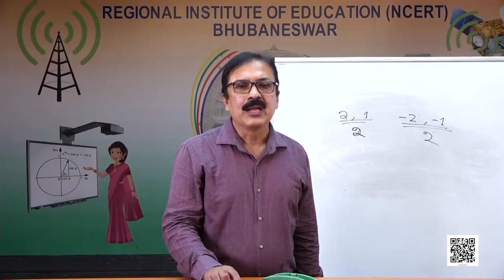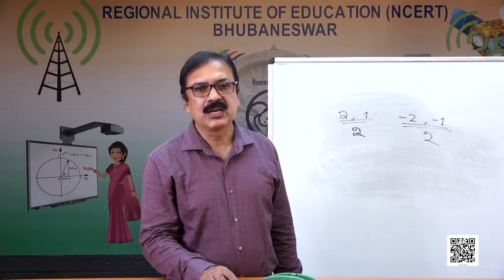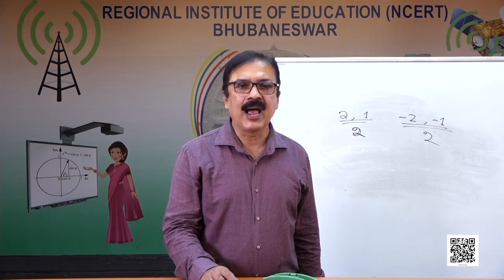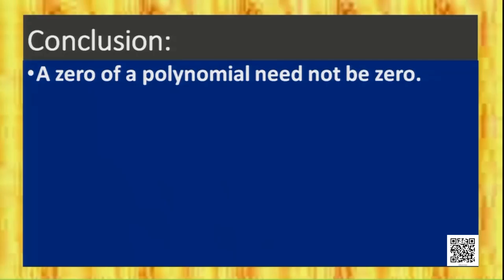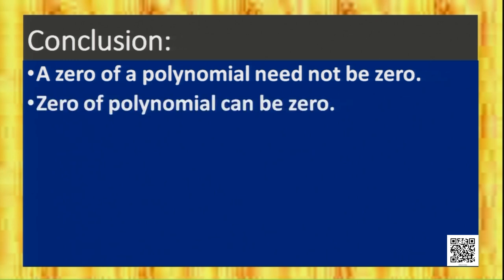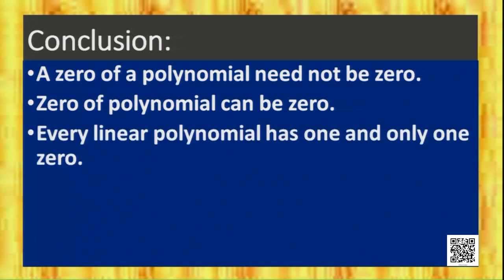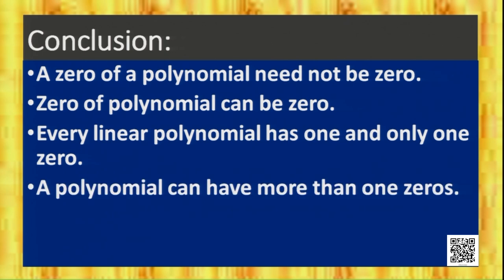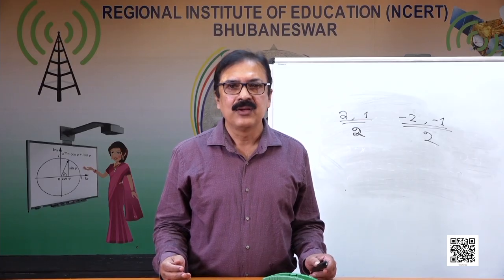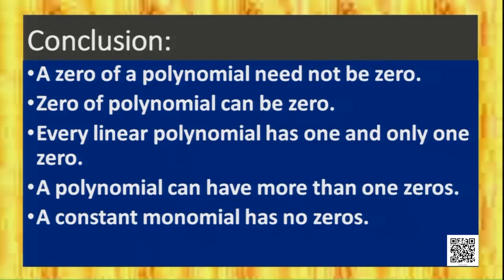From all these discussions we conclude: a zero of a polynomial need not be 0, but the zero of a polynomial can also be 0. Every linear polynomial has one and only one zero. A polynomial can have more than one zero — as in the case of quadratic polynomials, we saw two zeros. And a constant monomial has no zeros.